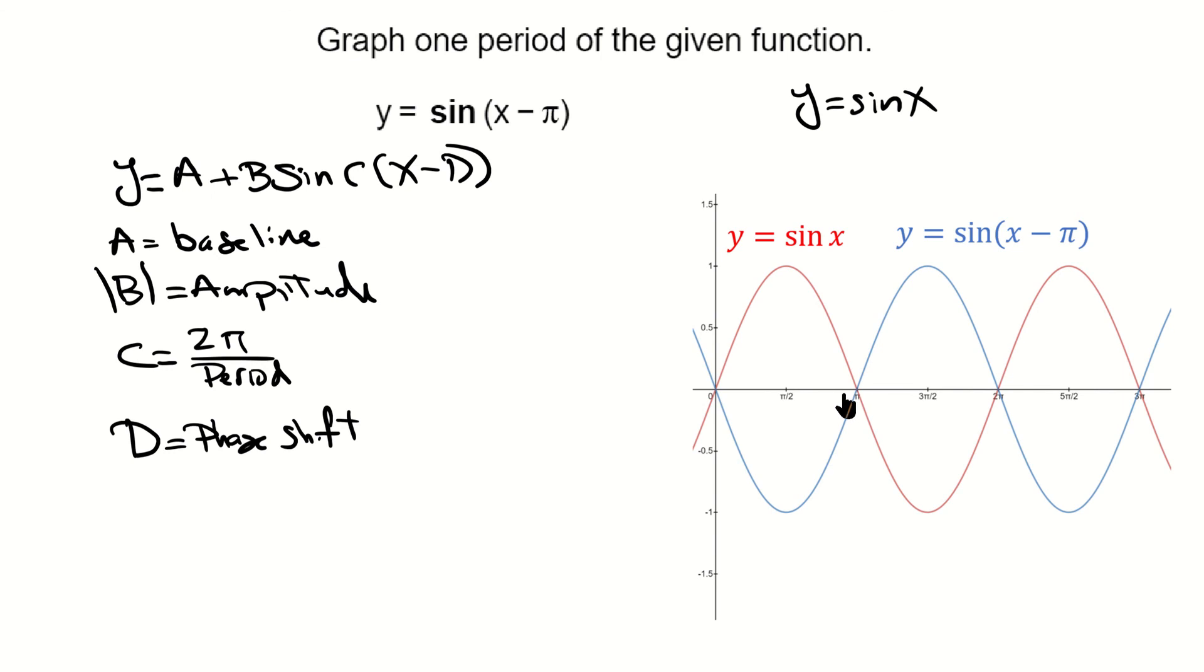So one full cycle, instead of running between zero and 2 pi, is going to run between pi and obviously pi plus 2 pi, which is 3 pi. And that's what we see here: 3 pi. And everything else is the same.